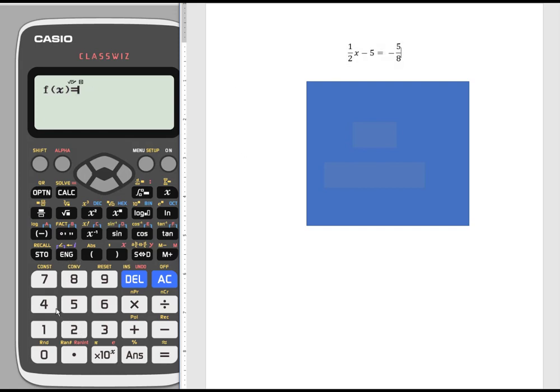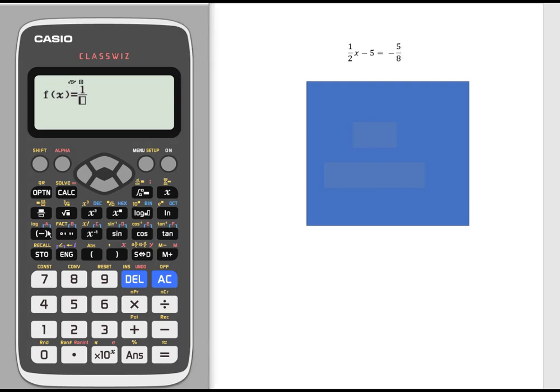I'm going to enter this one half x minus five and then the negative five-eighths as two separate functions. So my first function—and here again the template is a nice thing that we have—we can just enter it as a fraction as we see it. So one fraction template over two, and my x variable. This calculator does have an x variable button that's right up here to the right under the on, and then subtract five. My second function is just this other side of the equation, so negative five over eight.